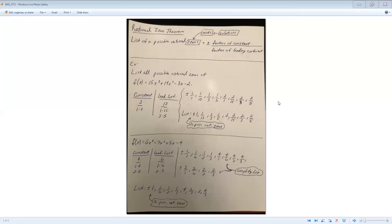So that'll give me the list of 1 over 1, 1 over 6, 1 over 2, 1 over 3, 4 over 1, 4 over 6, 4 over 2, 4 over 3, then 2 over 1, 2 over 6, 2 over 2, and then 2 over 3.